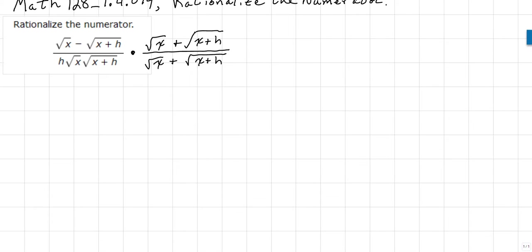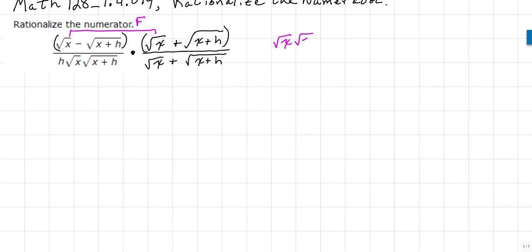So let's go ahead and do our multiplication. I'm going to enclose the numerator, both of them, in parentheses. And now I'm going to apply the FOIL method to do the multiplication. We'll do the first, which is going to be the square root of x times the square root of x. Then we're going to do the outside, which would be the square root of x times the positive square root of x plus h.